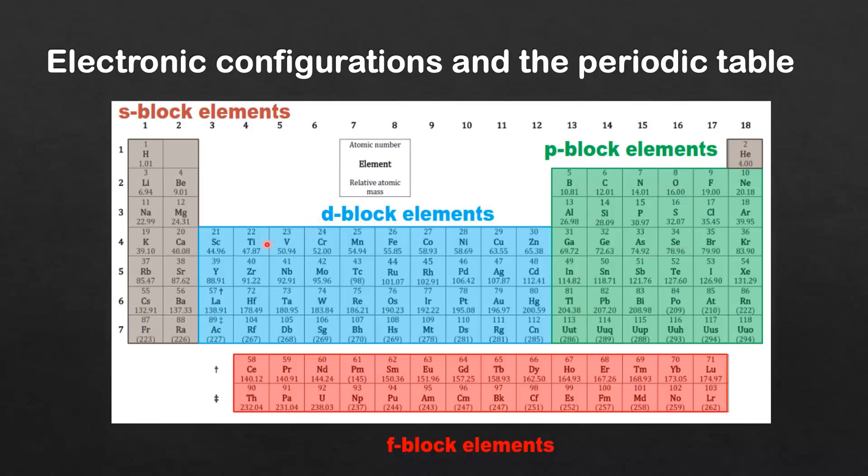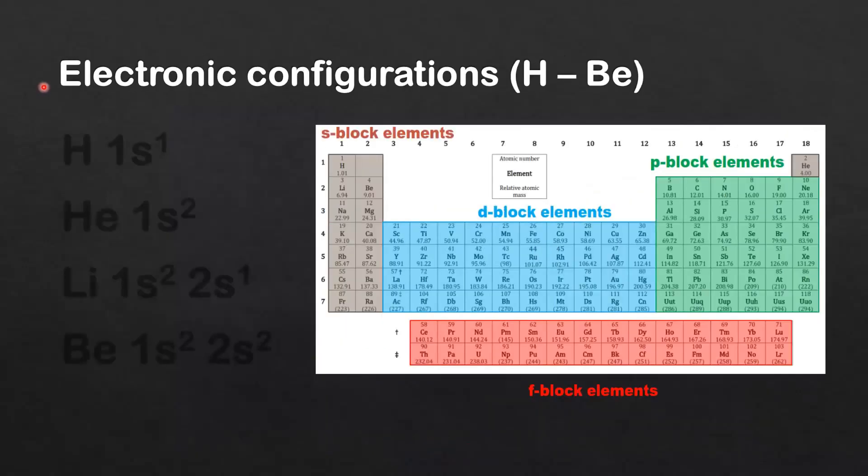Here are the d-block elements; they have their valence electrons in the d sublevel. And at the bottom we have the f-block elements; they have their valence electrons in the f sublevel.